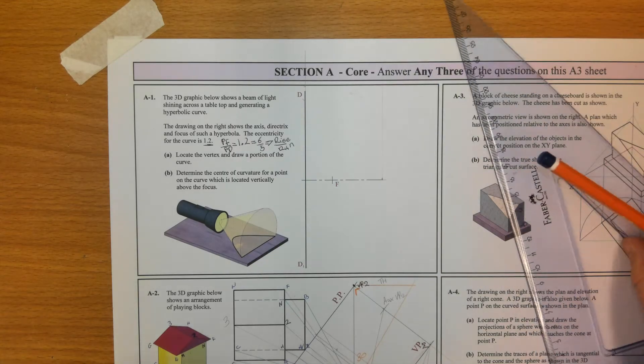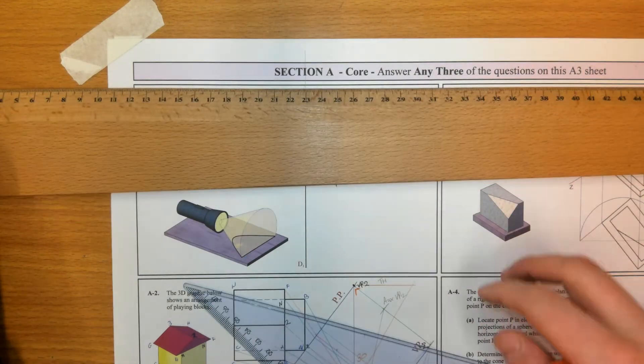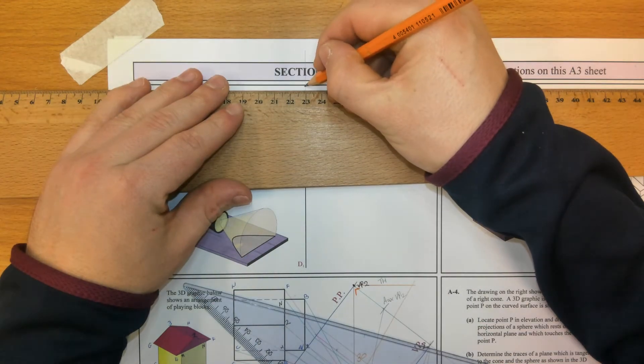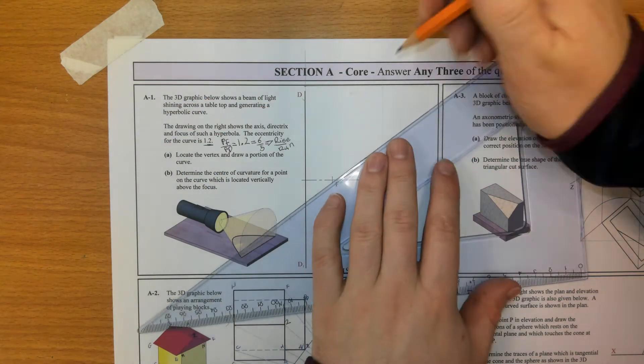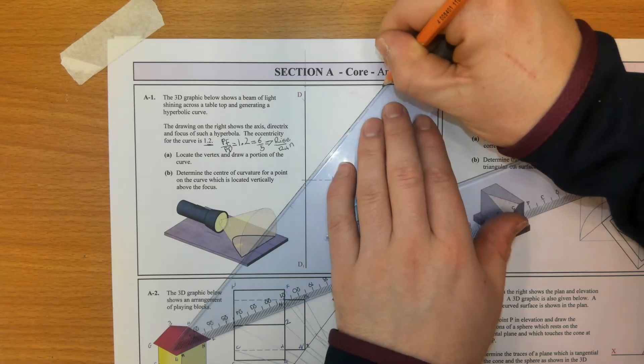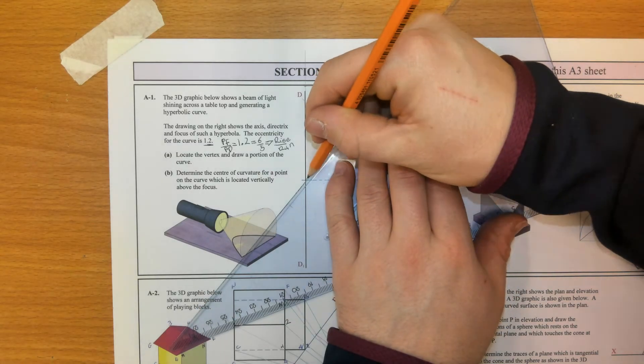I'm going to draw a light line up. I'm going to draw a light line across. And I'm going to join that back to the origin. So that's the line of eccentricity.